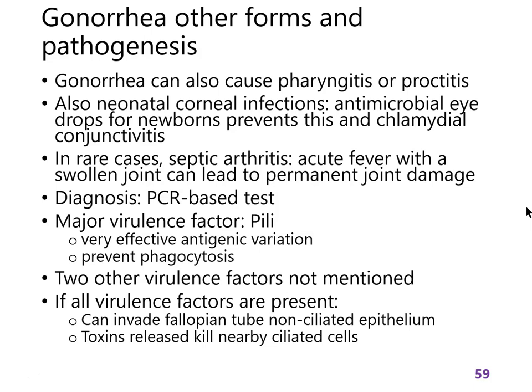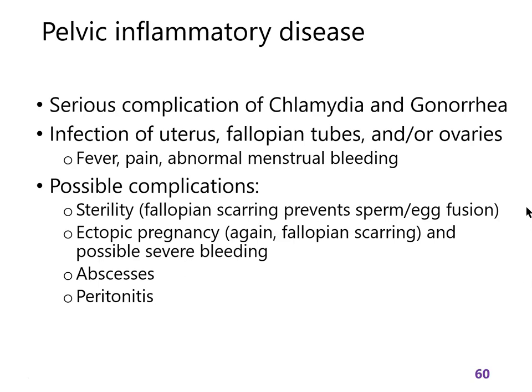The most common serious complication of both pathogens is pelvic inflammatory disease (PID), where bacteria move up from the vagina into the uterus, fallopian tubes, and potentially the ovaries. This is invasive and can lead to fever and other immune response symptoms, as well as dysregulation of the menstrual cycle. Complications range from sterility due to scarring of reproductive organs to abscesses and peritonitis.